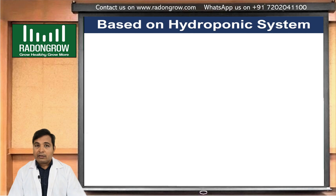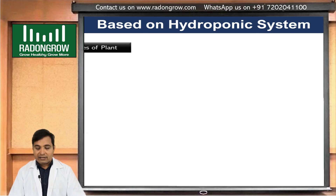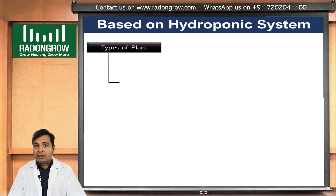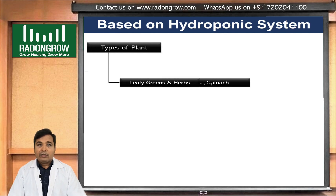First, we will bifurcate the plant as per its size and nature. Based on its size and nature, we can select the hydroponic system. This is not a scientific bifurcation, but a bifurcation based on the hydroponic system.